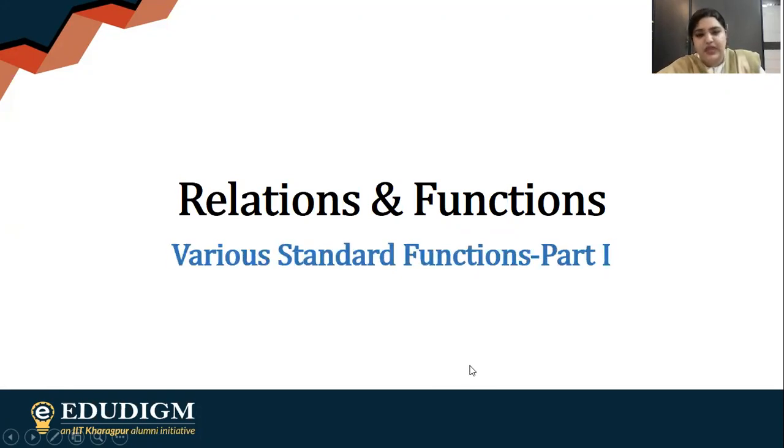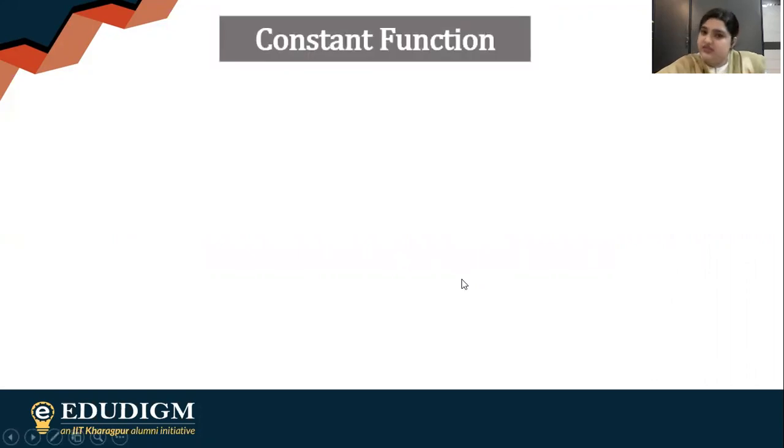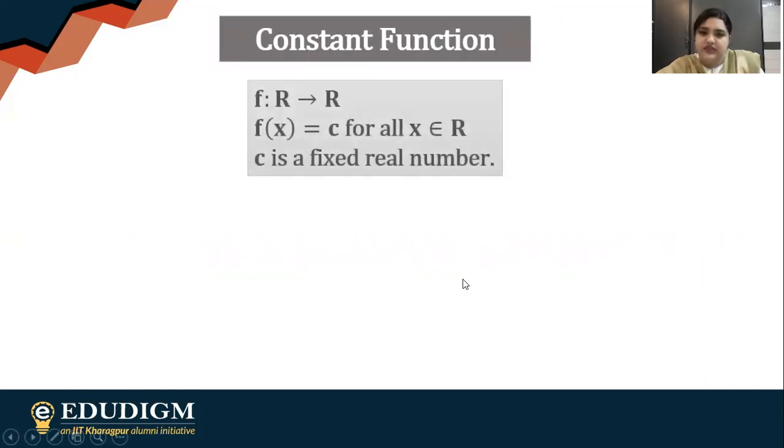The first one that we are going to talk about is the constant function. f is from R to R, f(x) equals to c for all possible real values and c is a fixed real number. If you just look at the definition, you don't have to memorize it. Look at the name of the function: constant. So whatever input we give, the output that we are having here is nothing but constant. c is a fixed real number.